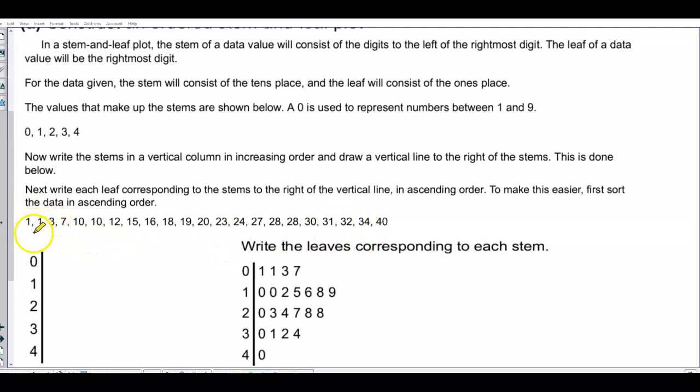Now we're going to look at all the numbers that have a tens place of a 0. So these are the numbers that have a tens place of a 0. So we have 0, and then we have all the numbers 1, 1, 3, 7.